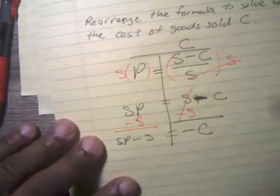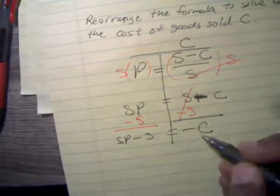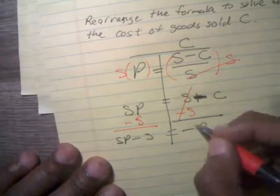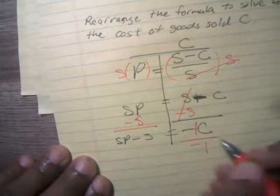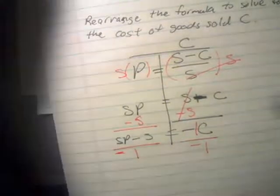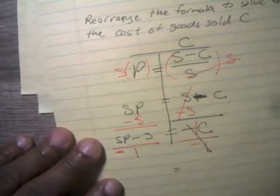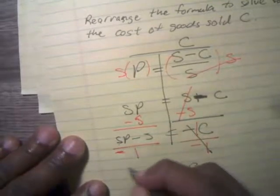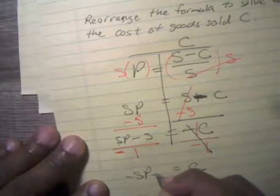That equals the only thing left on this side, which is just minus C. Now, to get C by itself, I can recognize that minus C is the same thing as minus one C. If that's the case, then I just divide everything by negative one. That's going to turn all my signs to the opposite, so I'll have negative SP and positive S.